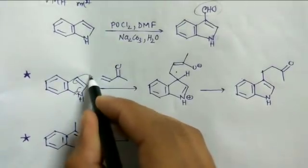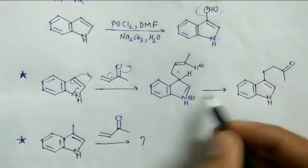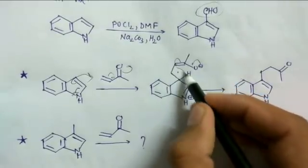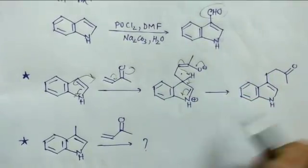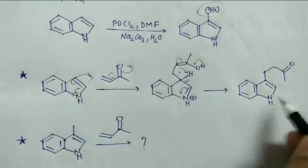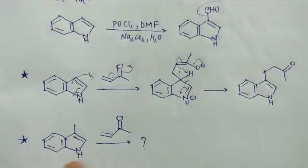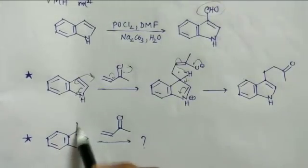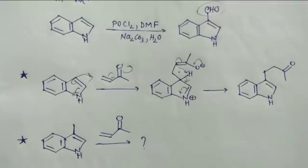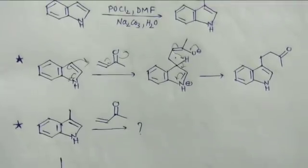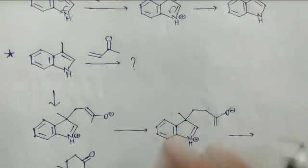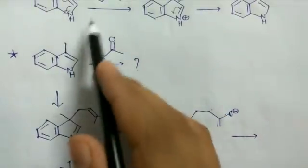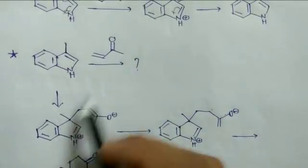Another important reaction is 1,4-addition (Michael addition). The indole acts as a nucleophile and the Michael acceptor undergoes 1,4-addition at C3, giving an intermediate. Tautomerization from the indole form gives the final product.